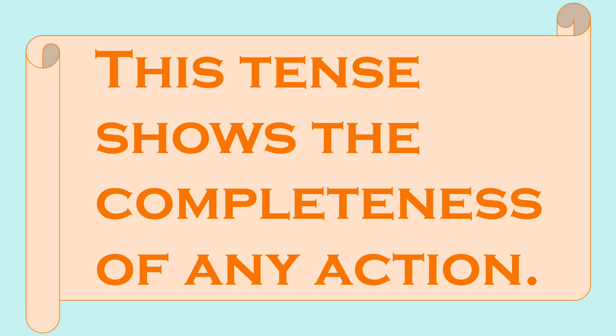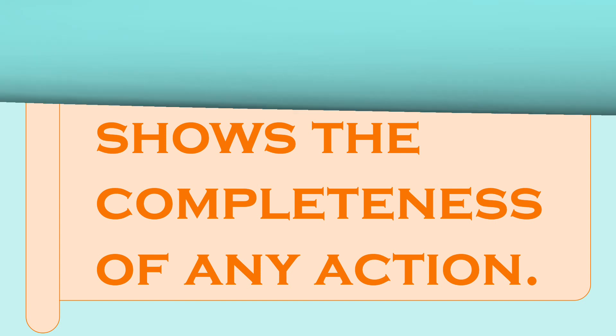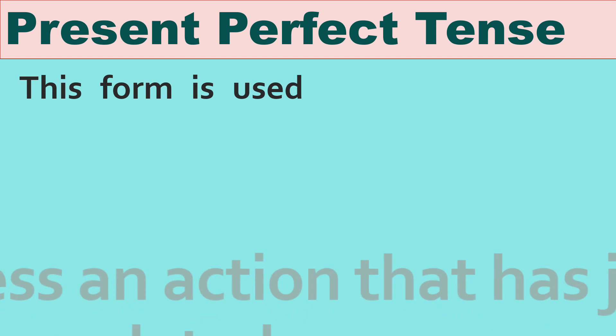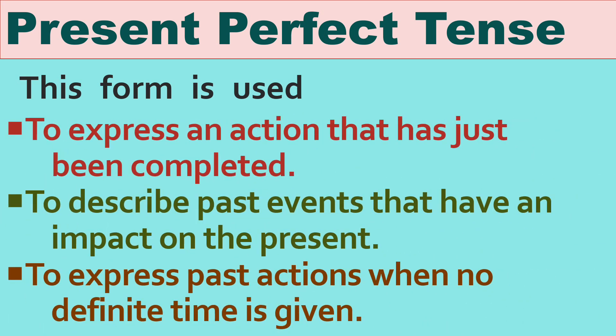Present perfect shows the completeness of any action — when our action is completed, that time we use this tense. This form is used to express an action that has just been completed. For example, 'he has just gone out' — this action has just been completed. Second point: to describe past events that have an impact on the present. For example, 'I have cut my finger' — this is a past event but still the impact is on the present; I still have pain on my finger.